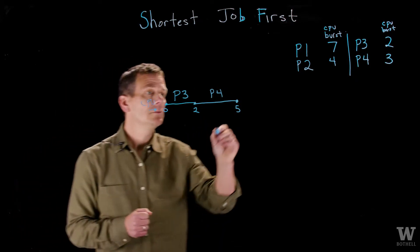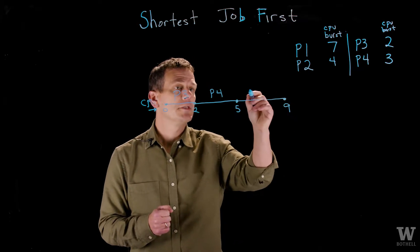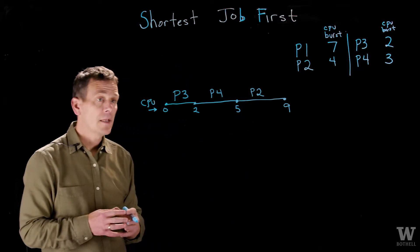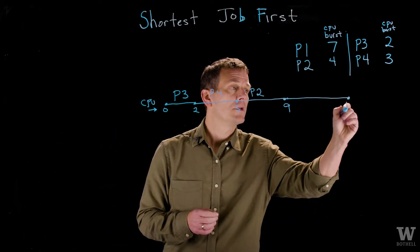Next one up would be P2, which requires four units, so that will take us to time 9. And then finally, P1 gets scheduled all the way until 16 units.